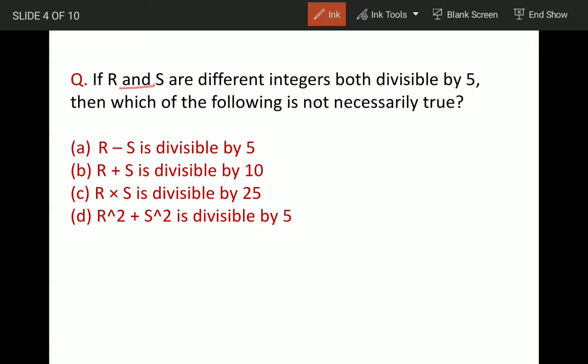R and S are different integers both divisible by 5. So which one of the following is not necessarily true?